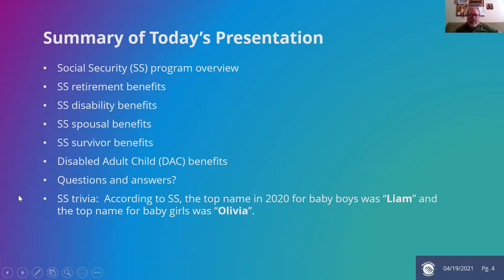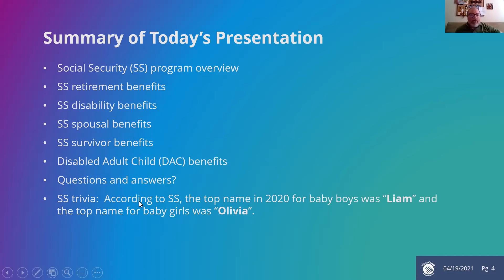Here's an overview of what we'll talk about today. We're going to talk about the social security program in general, then retirement benefits, disability benefits, spousal benefits, and survivor benefits. We'll very briefly touch on disabled adult child benefits — some professionals might run across that, and some families might have a situation where they'd want to apply for that. And then we'll be taking questions and answers hopefully along the way.